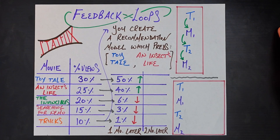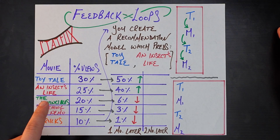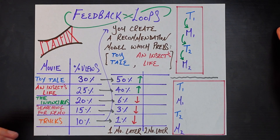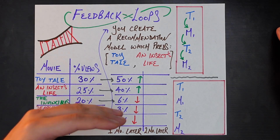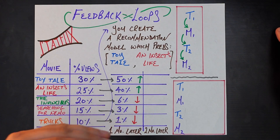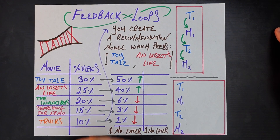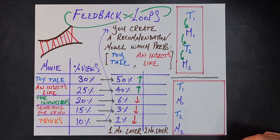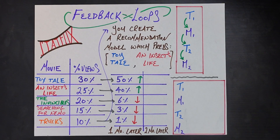Toy Tale went from 30 to 50% of all views. An Insects Life went from 25 to 40%, and the others shrank by a lot — 20 to 6%, 15 to 3%, and 10 to 1%. So 90% of all views are now among Toy Tale and An Insects Life, which are of course the two movies you recommended that people watch in the first place.